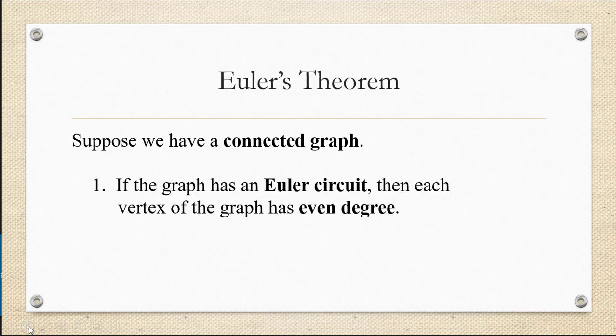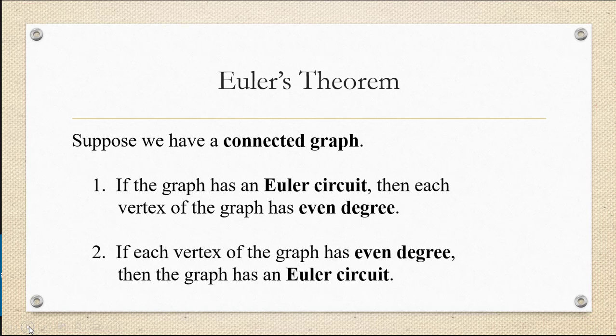We also learned Euler's theorem, that if we have a connected graph, if the graph has an Euler circuit, then it implies that vertices of the graph each have even degree. And if we know that the vertices of the graph each have even degree, then the graph must have an Euler circuit.